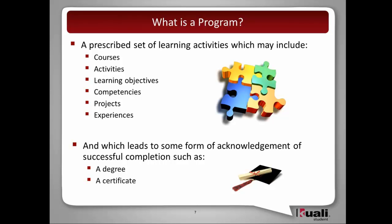We're going to take a look at curriculum management issues from the standpoint of what exactly a program is — not how they get created, not what the workflow is, but what the components of a program are. At a very basic level, a program is a prescribed set of learning activities. Those learning activities may include courses, activities, learning objectives, competencies, projects, and experiences. In addition, the program leads to some form of acknowledgment of successful completion — that can be a degree, a certificate, or a non-physical document acknowledging completion of the program.